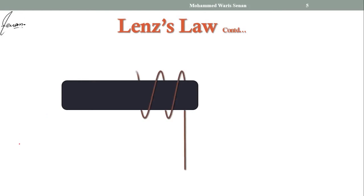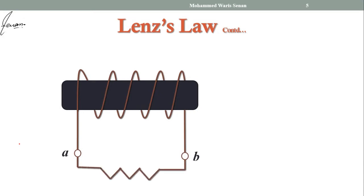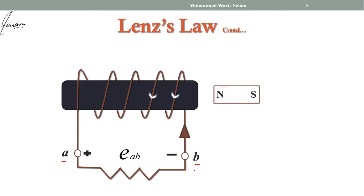To understand this concept, let us take an iron core and wrap a coil over it. To close the circuit, let us connect a resistance. Now bring a bar magnet. When you move this bar magnet towards the coil, the flux linking with the coil will change, and due to this change an EMF will be induced in the coil. We have two terminals in the coil, terminal A and terminal B. Let us take terminal A as positive and terminal B as negative.